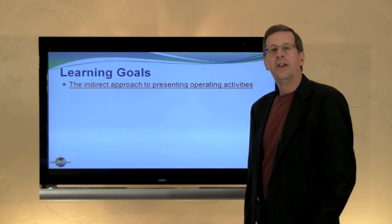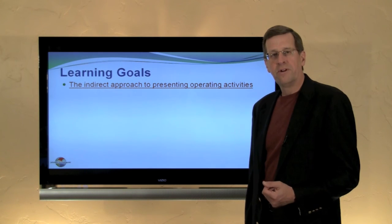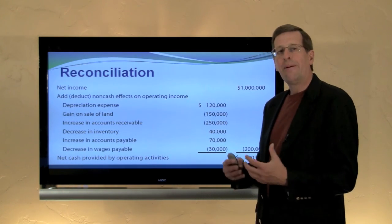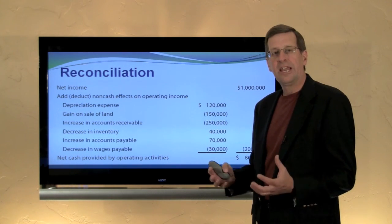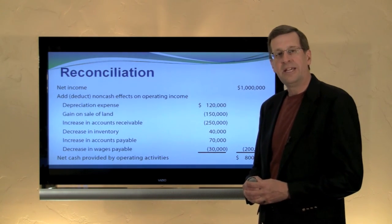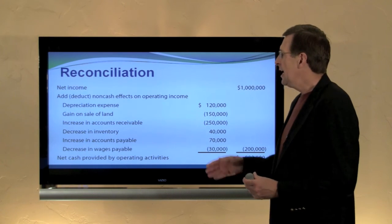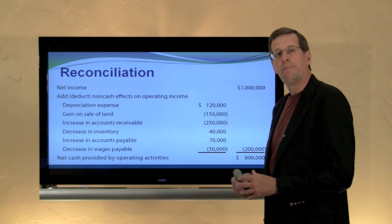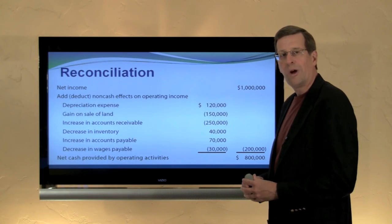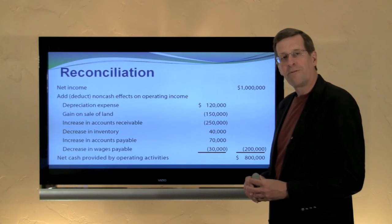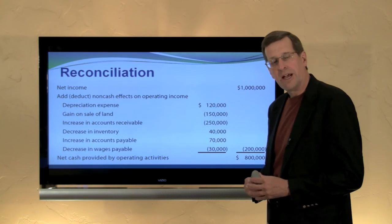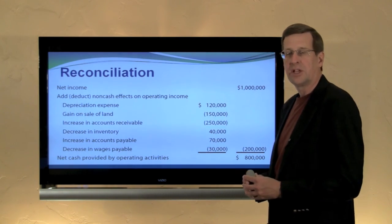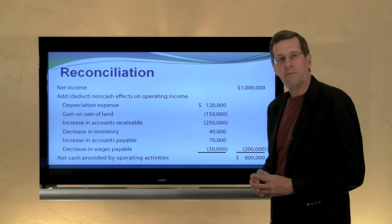A previous module looked at the direct approach, and these methods are very close but there are important differences. To begin with, the calculation of cash flows from operating activities with the indirect approach is based upon essentially the reconciliation format that was supplemental to the direct approach. So rather than presenting cash received from customers, cash paid to suppliers, cash paid for wages and so on, we'll start with the income of the business.